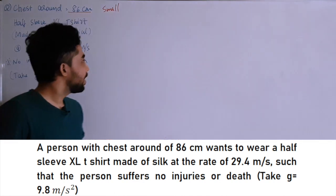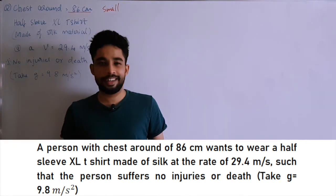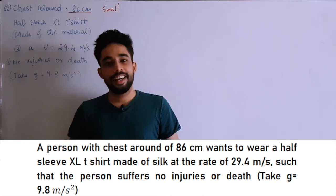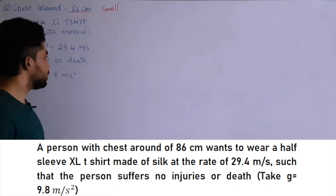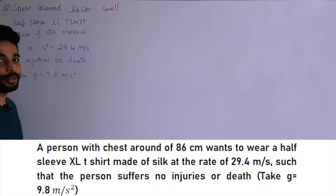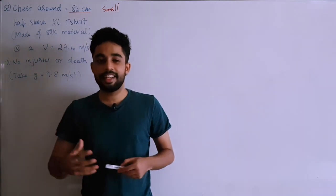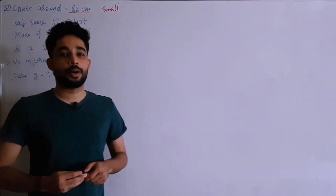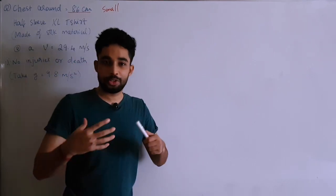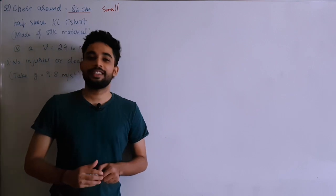They've also specified: no injuries or death. Normally wearing a t-shirt wouldn't cause injury, but here he has to wear it at 29.4 meters per second. I came up with this question to explain some physics concepts in an interesting and realistic way. Let me know your ideas in the comments — we'll have a good discussion there.